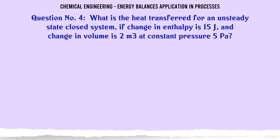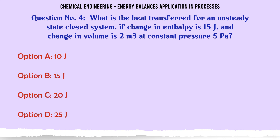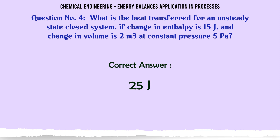What is the heat transferred for an unsteady state closed system if change in enthalpy is 15 J and change in volume is 2 m³ at constant pressure 5 Pa? A: 10 J. B: 15 J. C: 20 J. D: 25 J. The correct answer is 25 J.